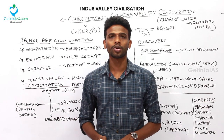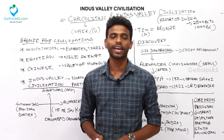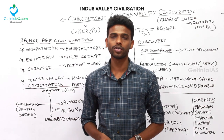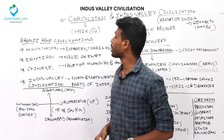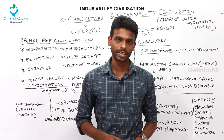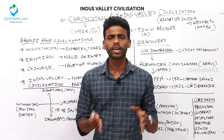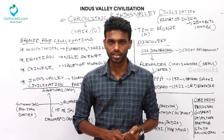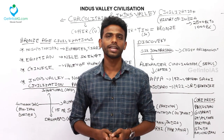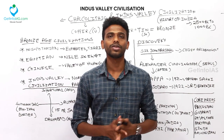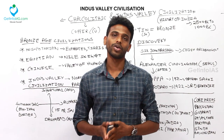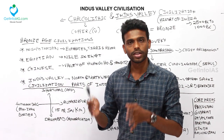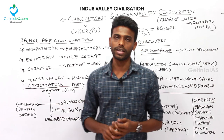Hello friends, this is Mohan Kumar from Get Into IAS. Today in this video we are moving on to the next section: Chalcolithic and Indus Valley Civilization. In the previous lectures we have seen about the Paleolithic Age, Mesolithic and Neolithic Age. By the end of the Neolithic Age, people started to domesticate animals and cultivate agriculture, and started to settle in different places.